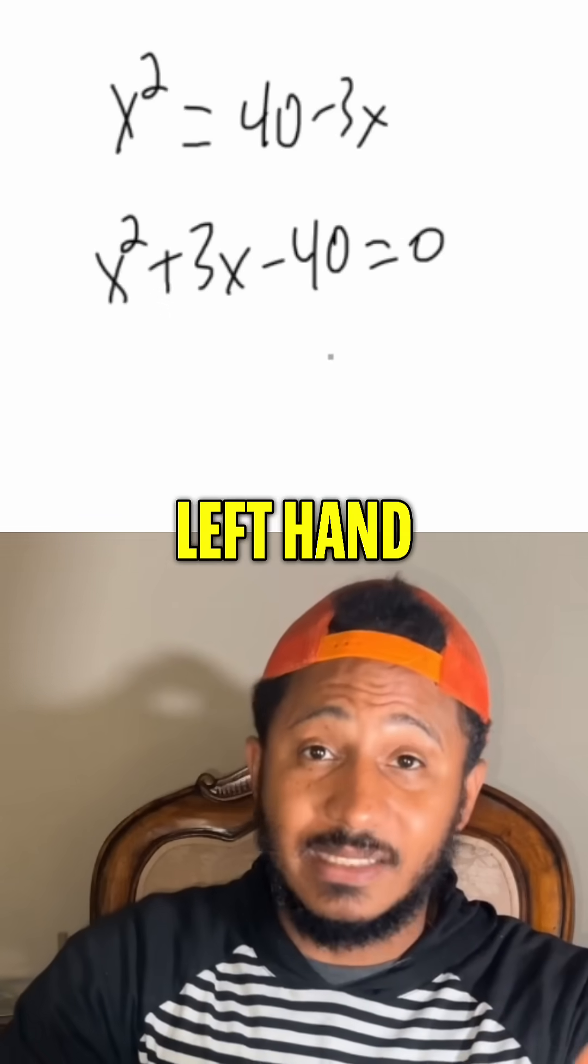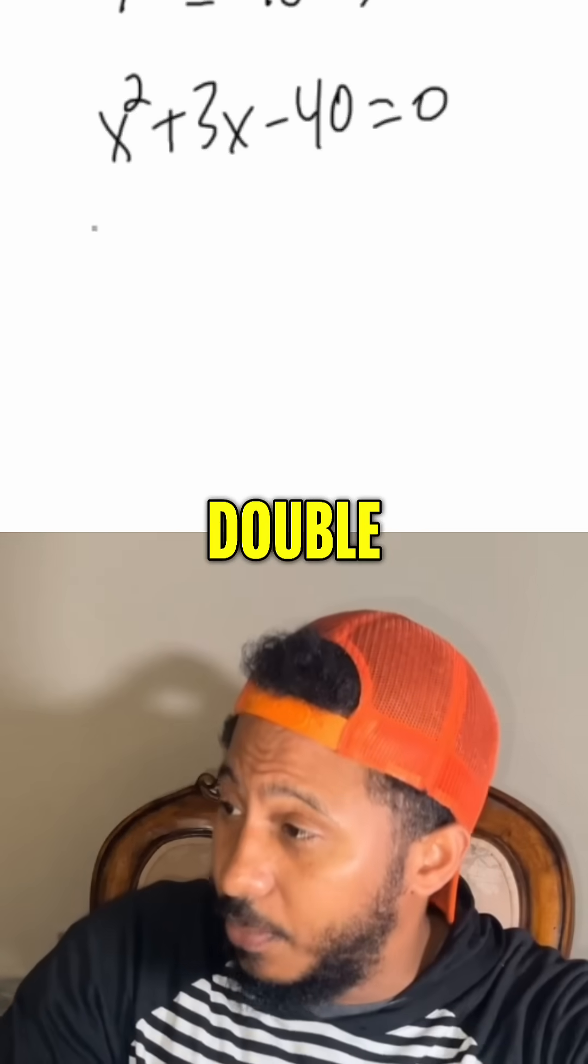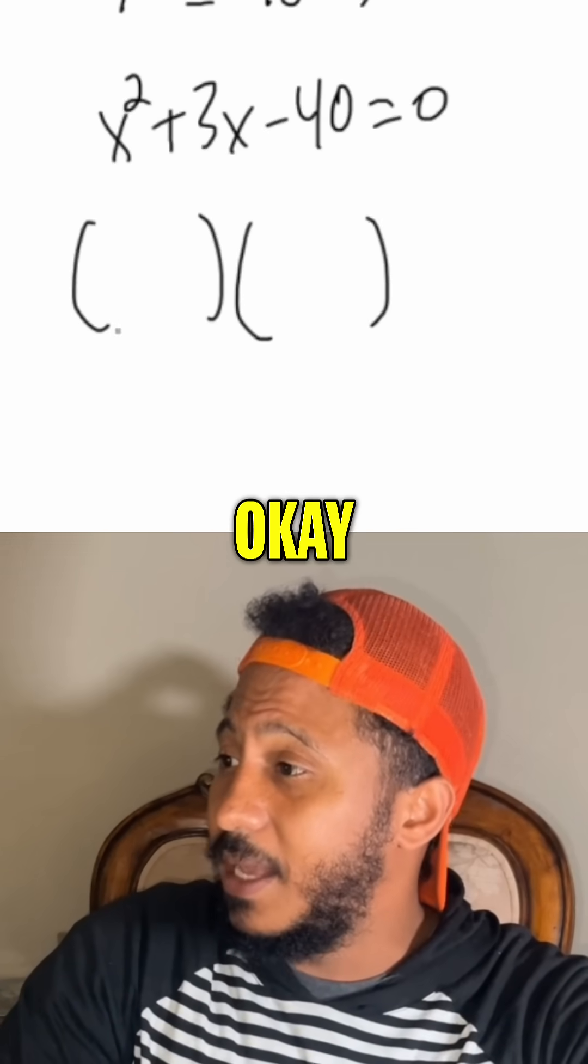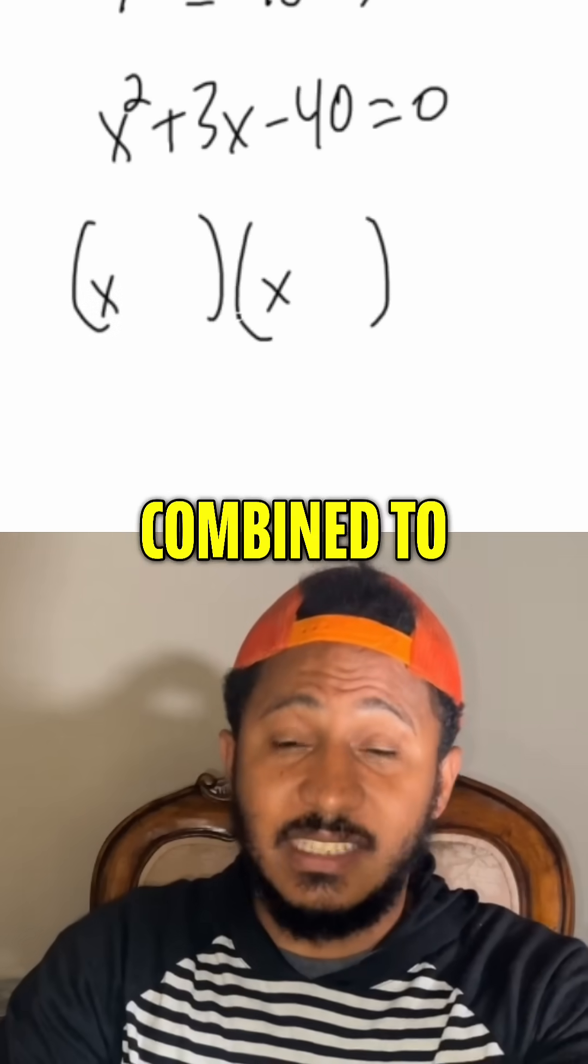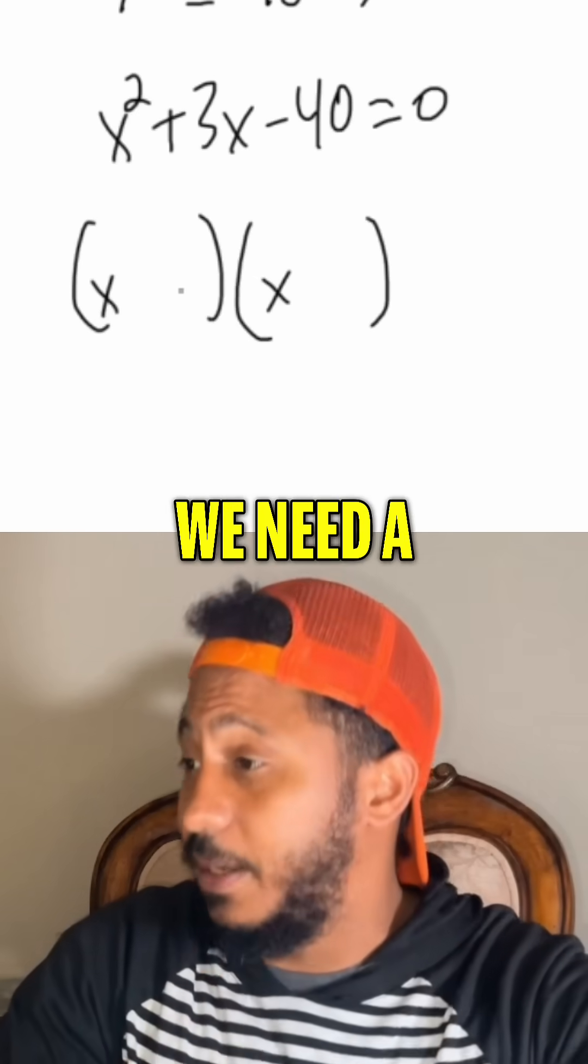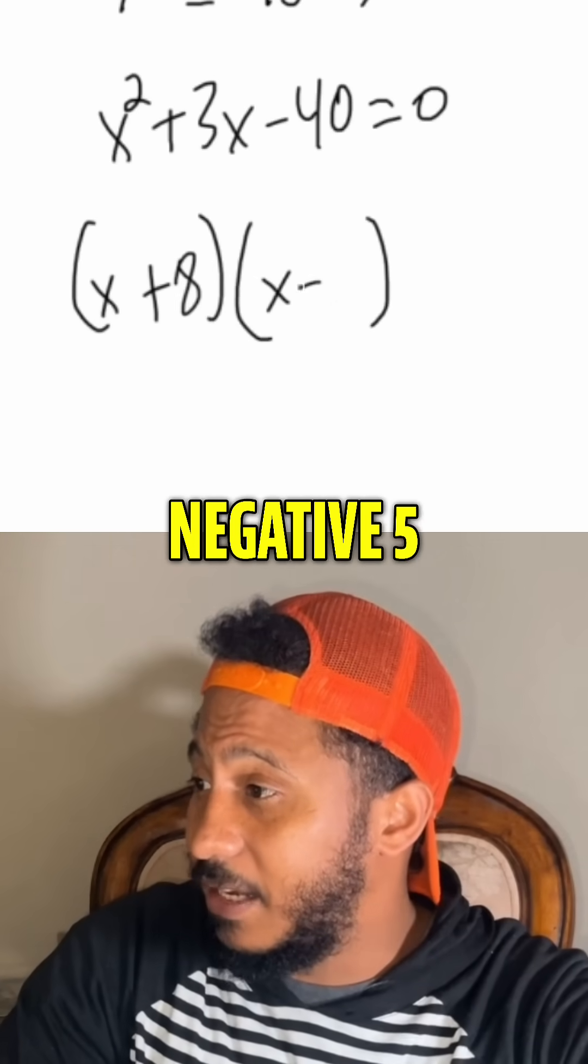Now we factor the left-hand side since it's three terms and there's a one in front. We go double bubble, okay, x and x. Now we need to notice that multiply to give me negative 40 combined to give me 3. So say 8 and 5. We need a positive 8 and a negative 5.